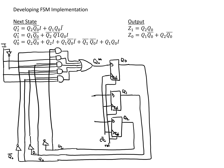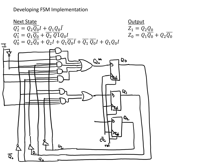Now we do the same thing for the Q1 bit. Here we've only got two terms, so we just need two AND gates. For the first one, we need Q1 and Q̄0. For the second one, we need Q̄2, Q̄1, Q0, and I. That takes care of the next state bit for Q1.